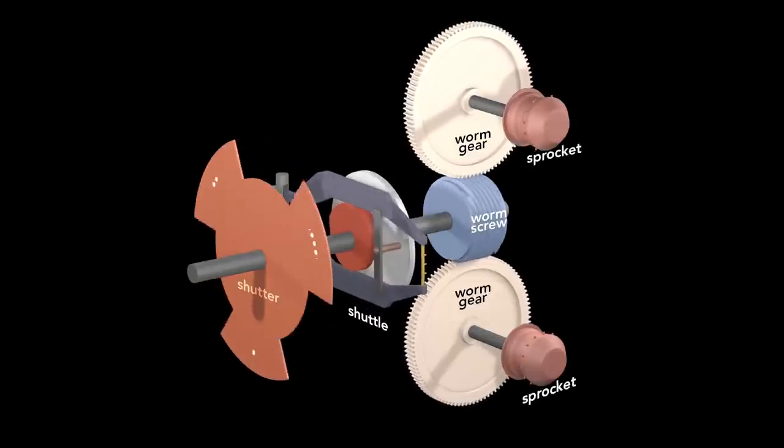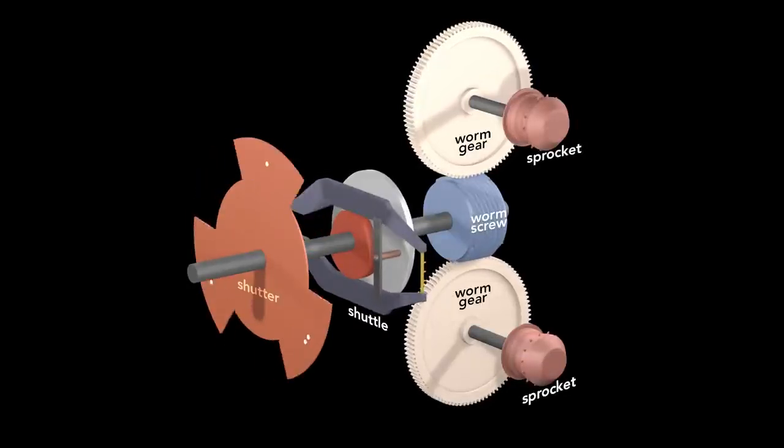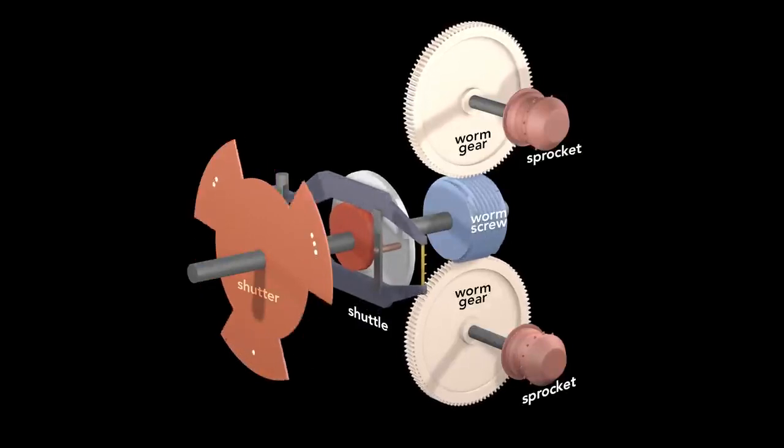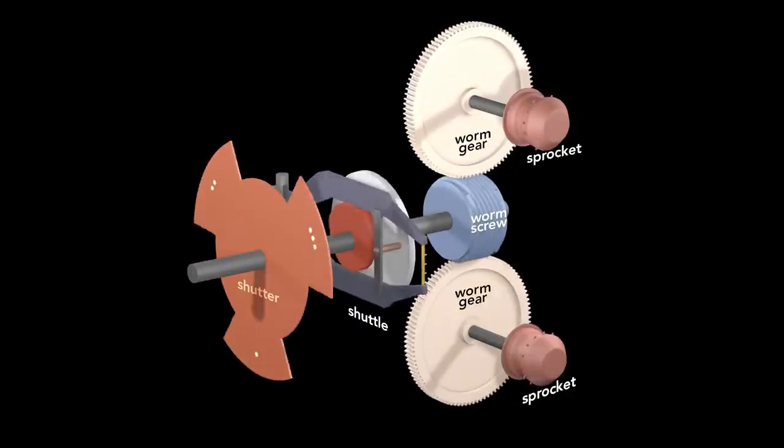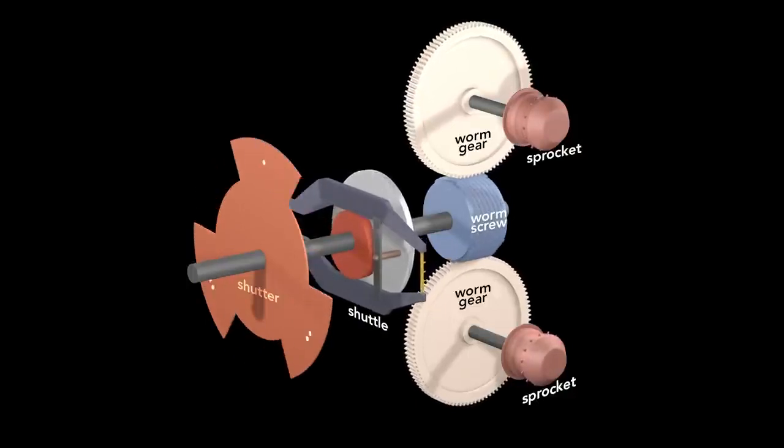So this means that with every rotation of the axle, the shutter blocks and flashes light three times, the shuttle pulls down a single frame, and the worm screw rotates the gears and sprockets one-fourteenth of a revolution.